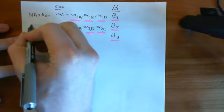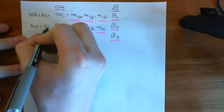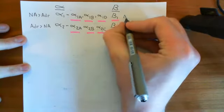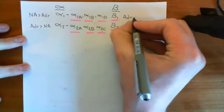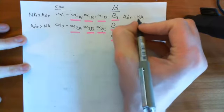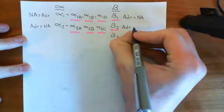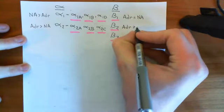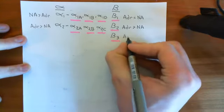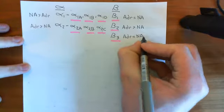For alpha-2, it's the other way around — adrenaline is better at binding to alpha-2 than noradrenaline. For beta-1, they are both equal in affinity, so adrenaline's ability to bind to the beta-1 receptor is roughly the same as noradrenaline's. For beta-2, adrenaline is better at binding than noradrenaline. And for beta-3, it's approximately equal.